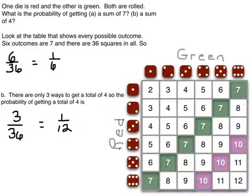All right, so we're going to pretend that this set of dice are green, and these are red. So one die is red, the other is green. We roll both. So what is the probability of getting a sum of 7, or a sum of 4? So I've got this table here. We're going to look at the table and see every possible outcome.